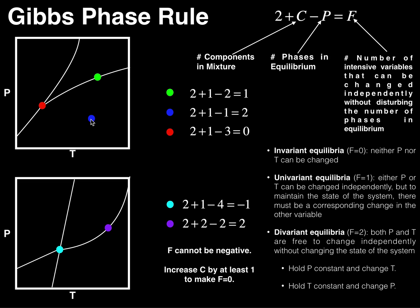So for the blue dot, I'm completely free to independently change either pressure or temperature — the other one can be held constant. They can both change at the same time as well, but the point is we can change one and it's perfectly legal. Divariant equilibrium generally occurs when your position is in the middle of a phase area.